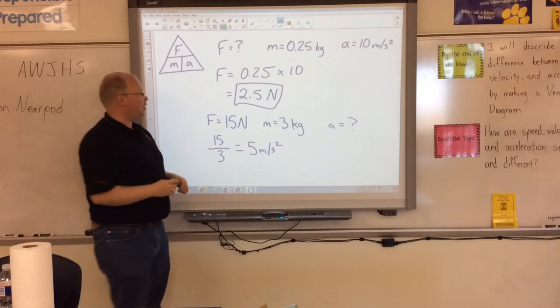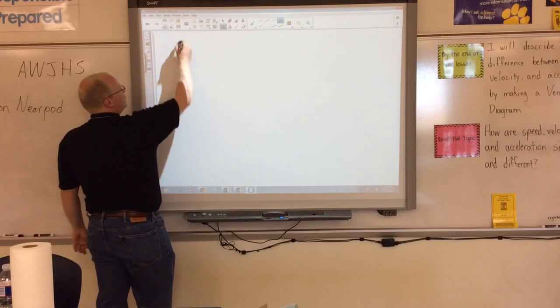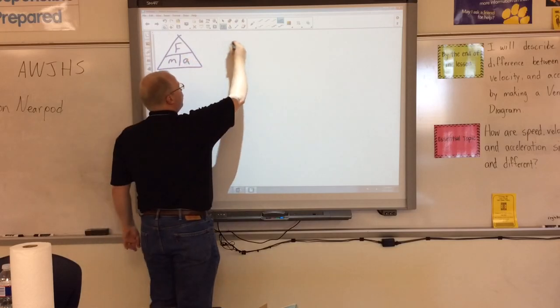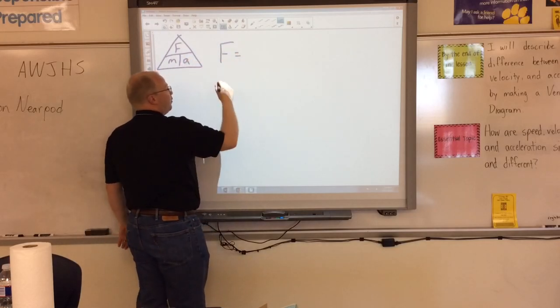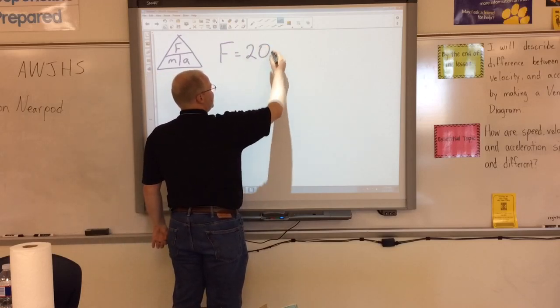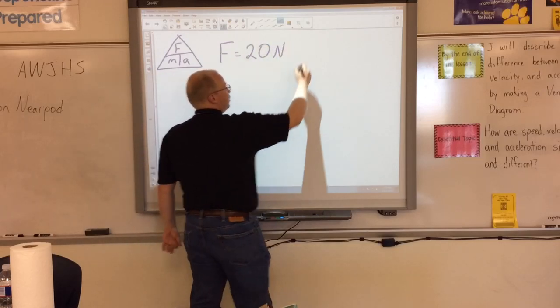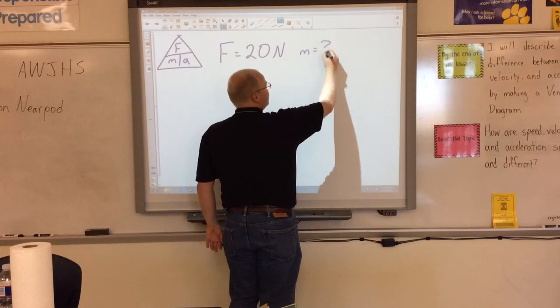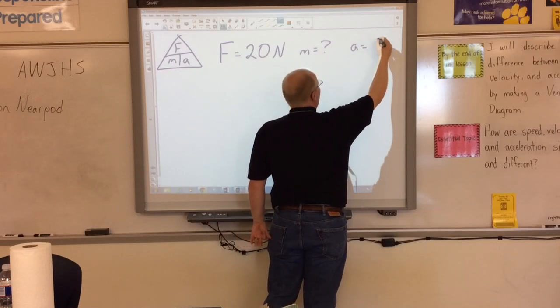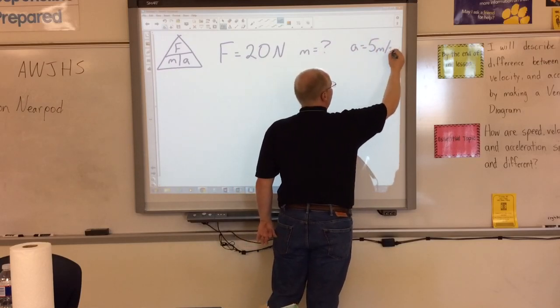So we'll do one more example, and then we'll call it good. What if I'm looking for the mass, F, M, and A? I know the force that I'm going to be supplying is, let's say, relatively easy, 20 newtons. My mass, I'm not sure, but I know I want it to move at 5 meters per second squared.